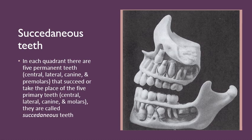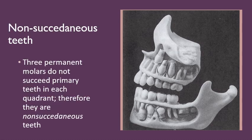So the question arises: what are non-succedaneous teeth? Non-succedaneous teeth are those permanent molars — namely the first, second, and third permanent molars — that do not succeed the primary teeth in each quadrant.